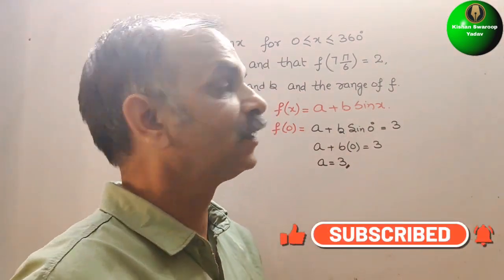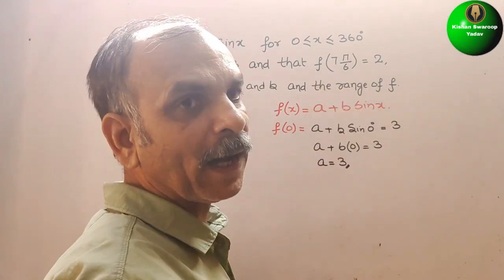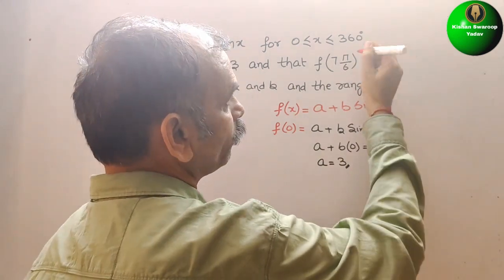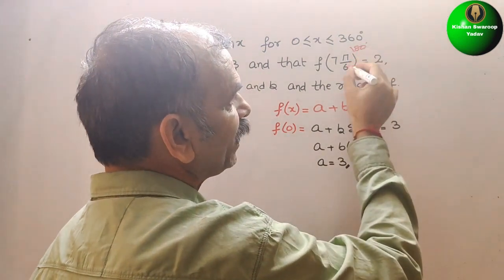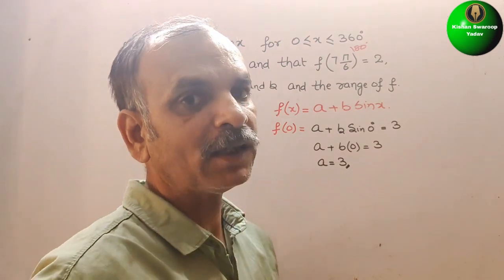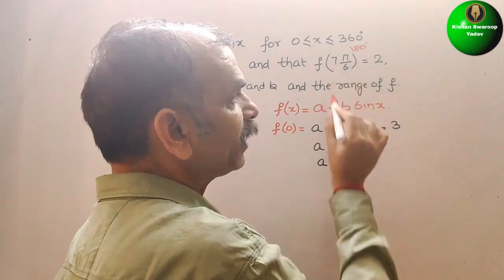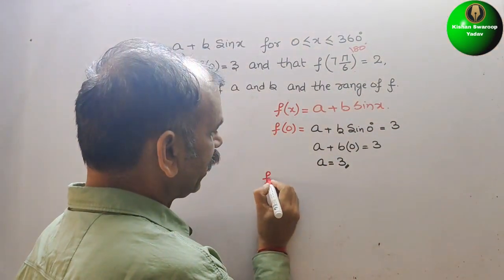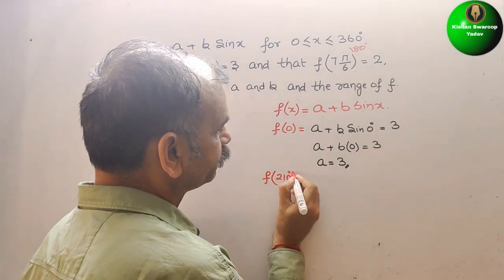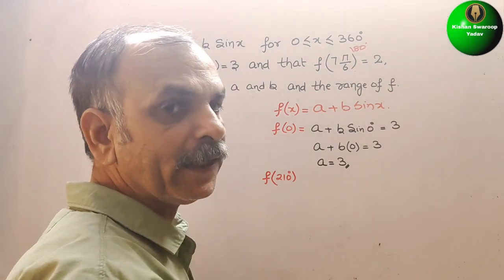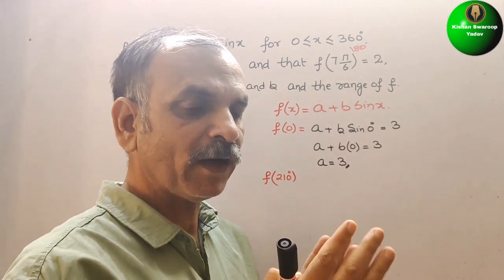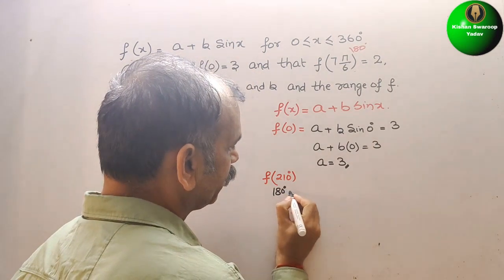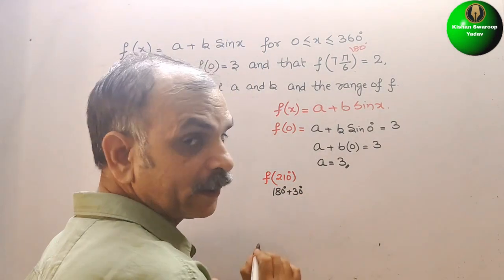Second, they have given f(7π/6). Pi means 180 degrees, so 180 divided by 6 is 30 degrees. 30 into 7 is 210 degrees. So we write f(210°), and 210 degrees can be written as 180 plus 30 degrees.